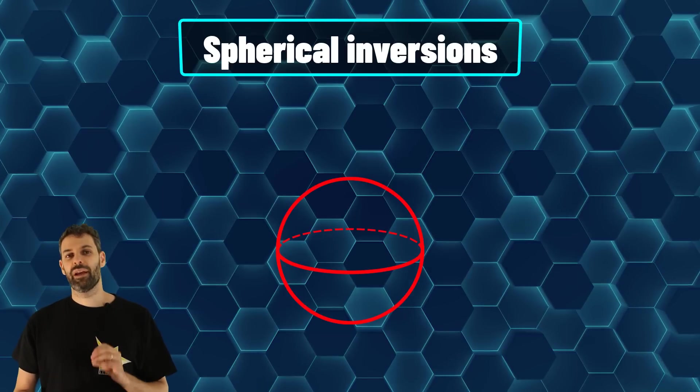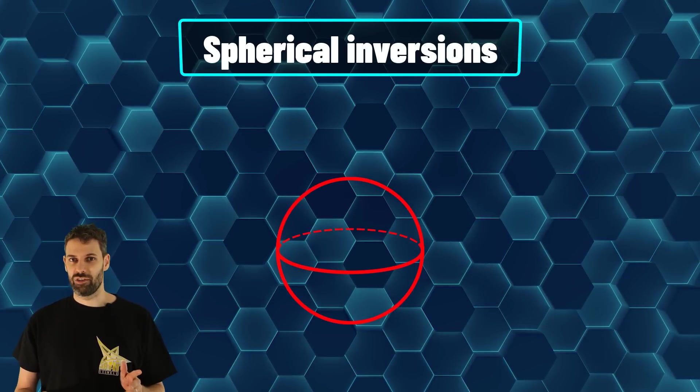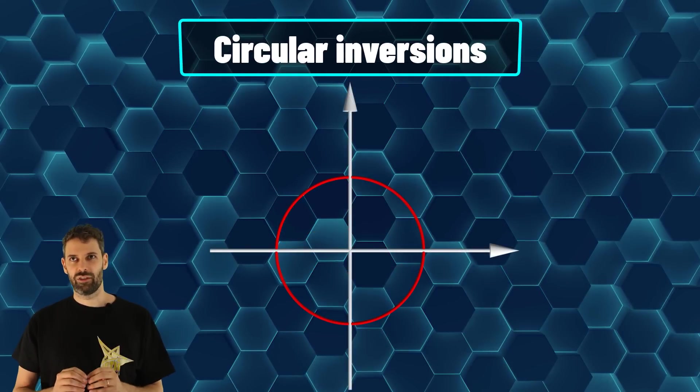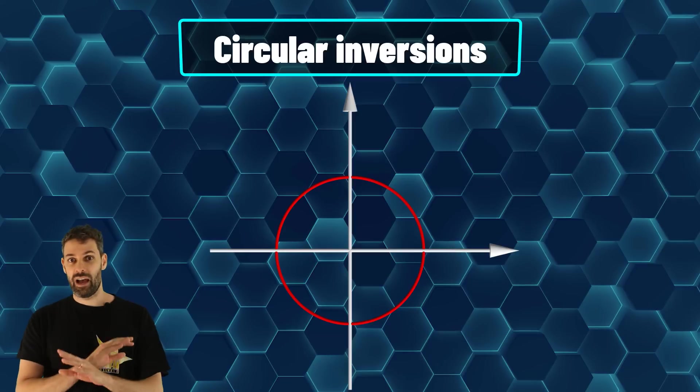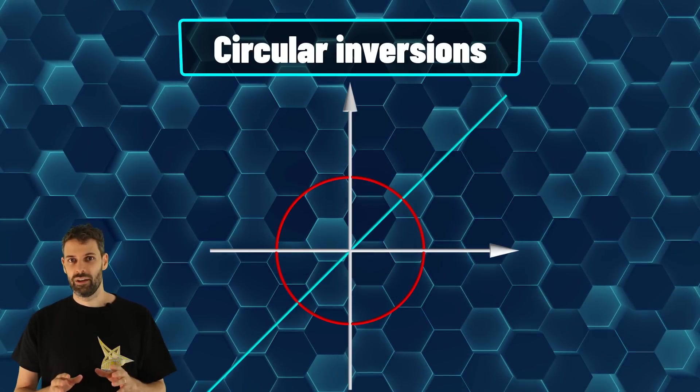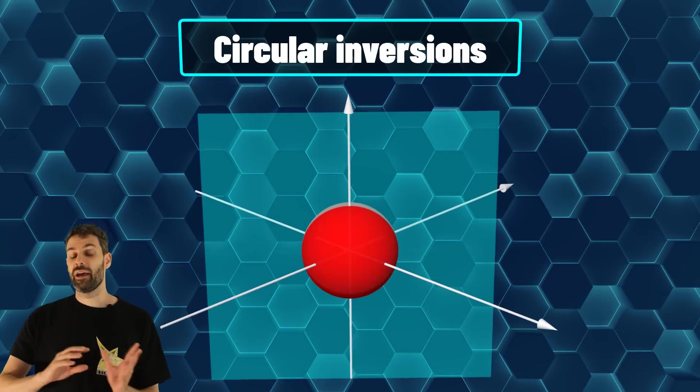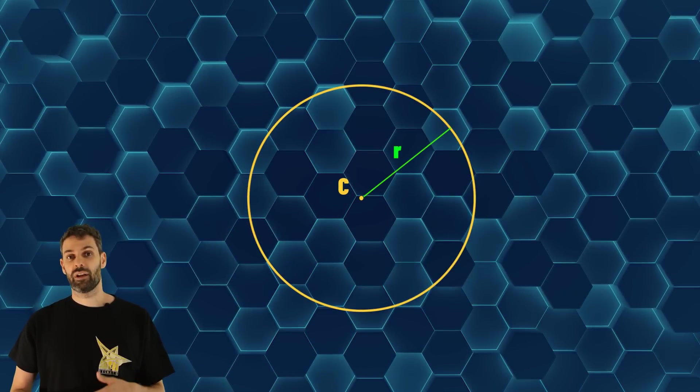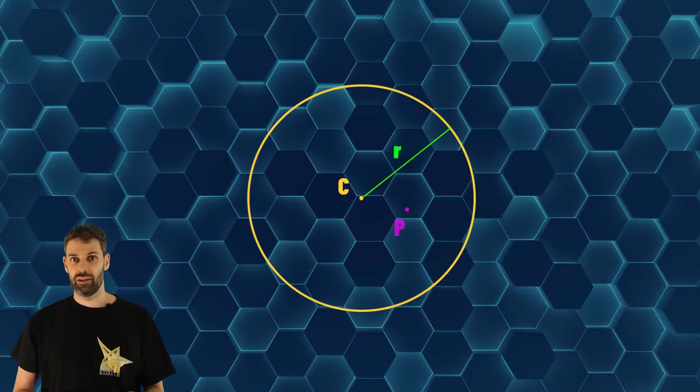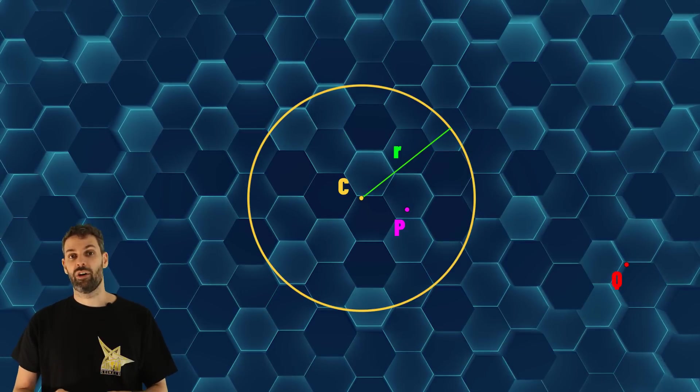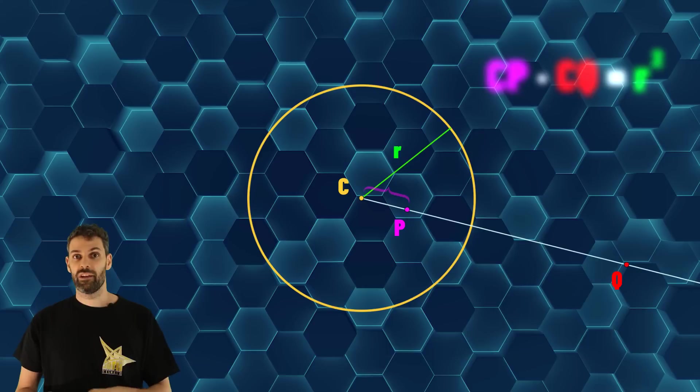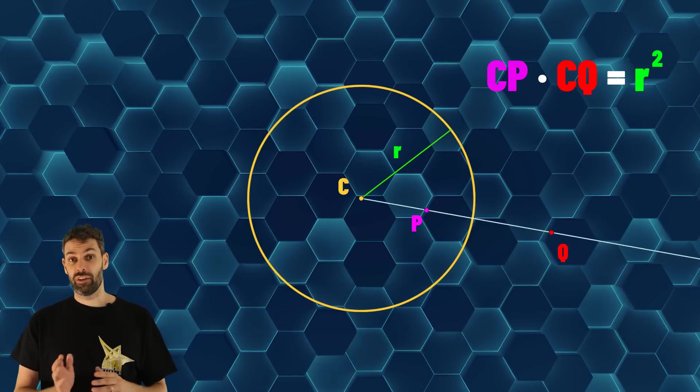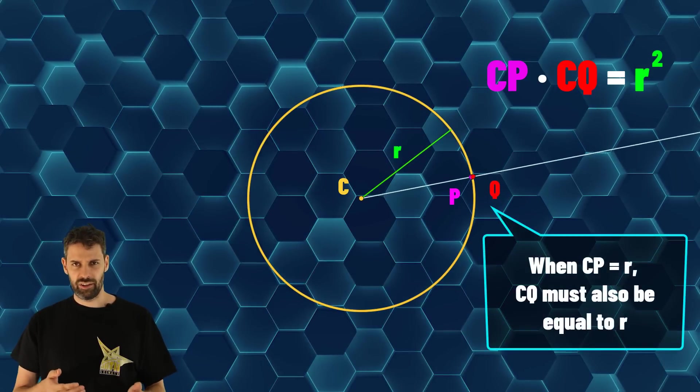The magic is done by a construction called spherical inversions. I will cheat a little bit and I will talk about circular inversion, which are the analogous but in two dimensions. But everything I will say about circles and lines will be true for spheres and planes. Take a circle with center C and radius R. A circular inversion of a point P is another point Q, which lies on the same ray and such that CP times CQ equals R squared. As you notice, the points on the circle are fixed, since their distance is exactly R.